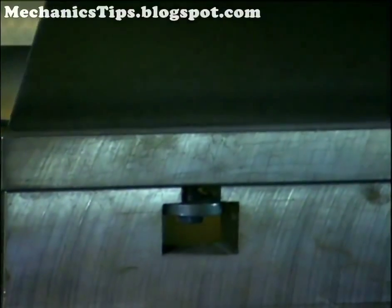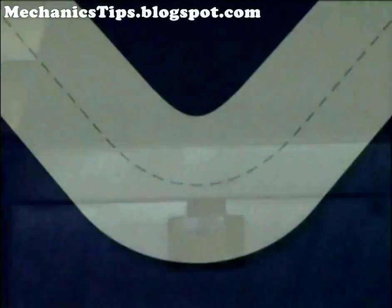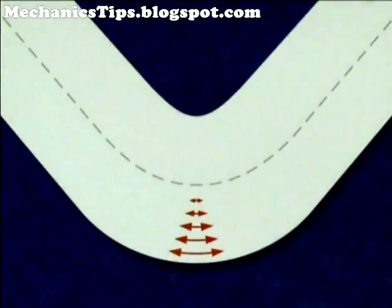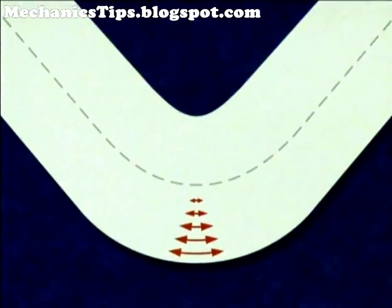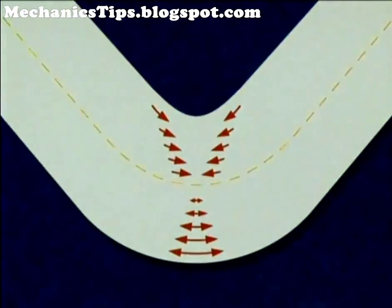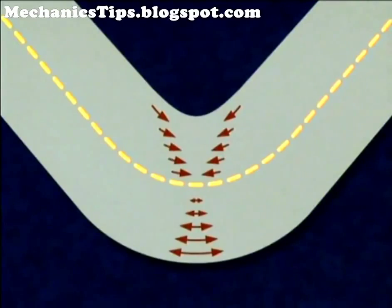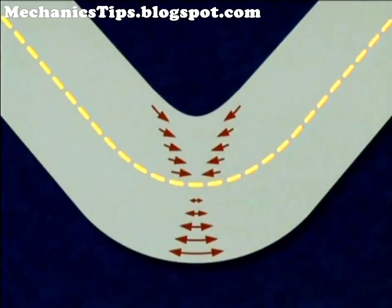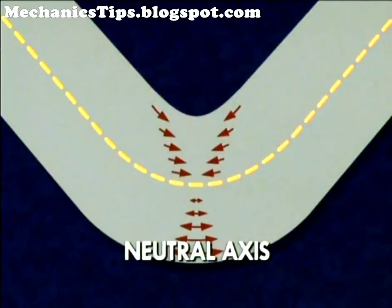As the part is bent, it undergoes a distortion so that the material outside the bend is forced to stretch under tension, and the material inside the bend is forced to compress. Between the tension and compression zones is an area where the material is neither forced to stretch nor to compress. This is called the neutral axis.